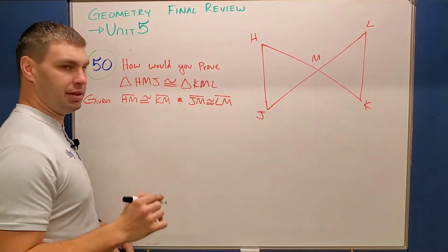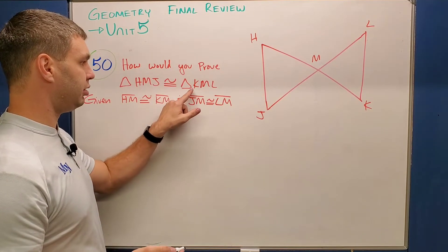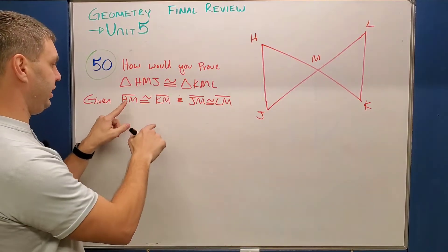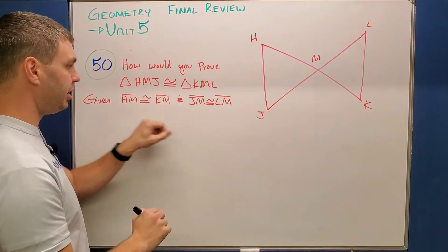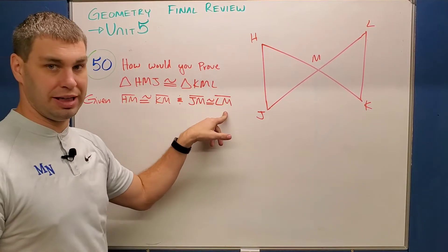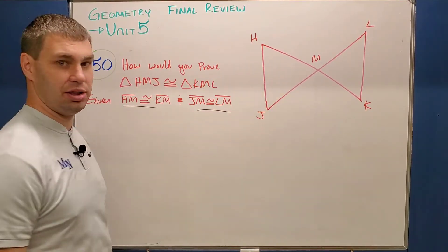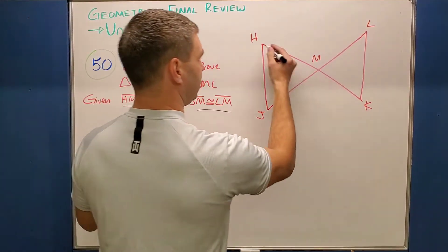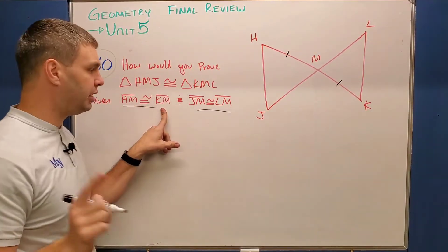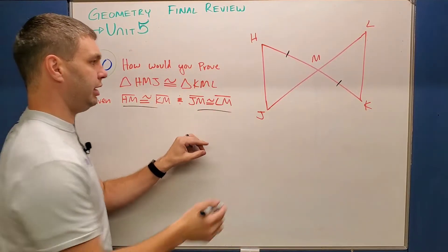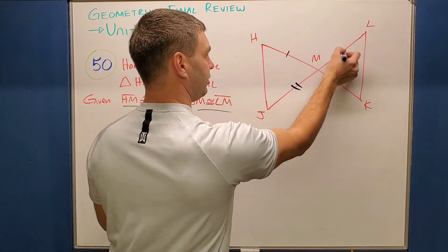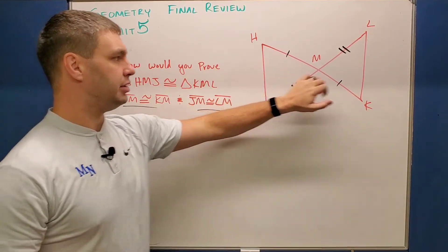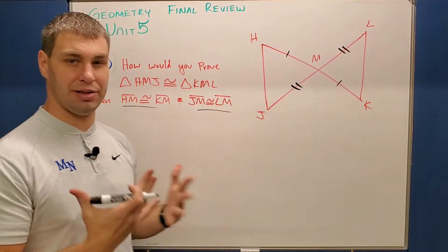This next one says: how would you prove triangle HMJ is congruent to triangle KML? Given that HM is congruent to KM and also JM is congruent to LM. Let's first mark these two things in the picture. HM and KM — I'll put a tick mark here and here to show those are congruent — as well as JM and LM. So I see two sides in this triangle and two sides in this triangle, and they're both corresponding sides.